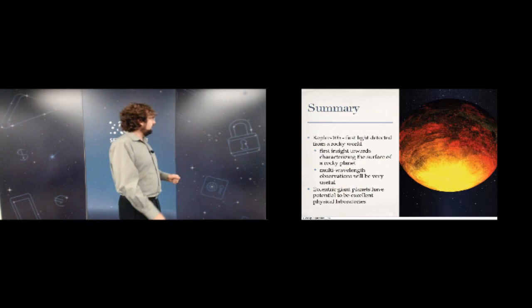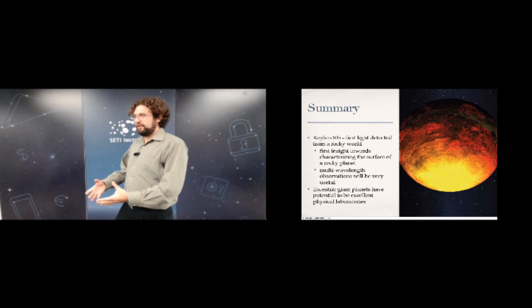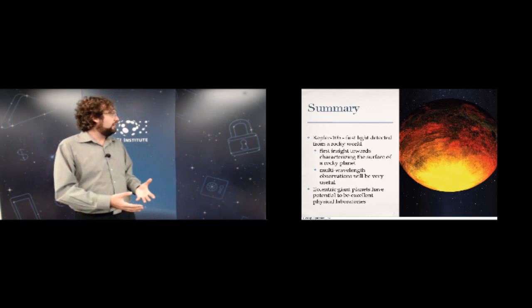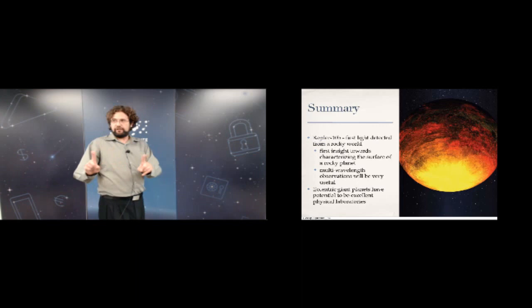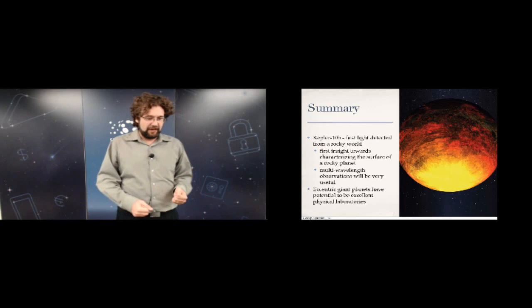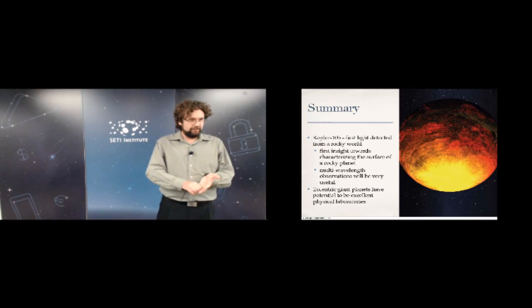To summarize: Kepler-10b is the first time we've detected light from a rocky world, giving us the first insight into characterizing the surface of a rocky planet. We have a single bandpass measurement with degeneracies, but future instrumentation — like JWST and other infrared facilities — will allow us to get our first two-color measurement and start breaking those degeneracies. Eccentric giant planets have the potential to be excellent physical laboratories for measuring atmospheric properties like heat capacity.